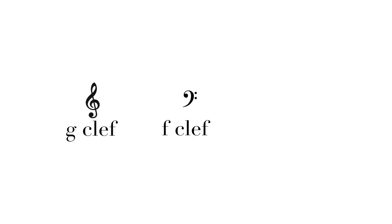There are three basic clefs used in modern music: the G clef, the F clef, and the C clef. Why do we need different clefs? Why can't we just use the same one for all music? The main purpose of the clef is to make reading easier for instruments and voices that have different ranges. We want to write as many notes on the staff, not above and below.